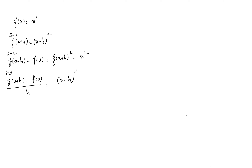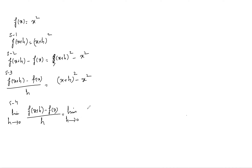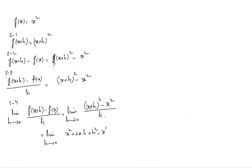Step three is we divide both sides by h: [(x+h)² minus x²] / h. Step four, we apply the limit as h goes to zero: limit h→0 of [f(x+h) - f(x)] / h, which gives us limit h→0 of [(x+h)² - x²] / h. Expanding, this becomes (x² + 2xh + h² - x²) / h, and the x² terms cancel, leaving limit h→0 of (2xh + h²) / h.